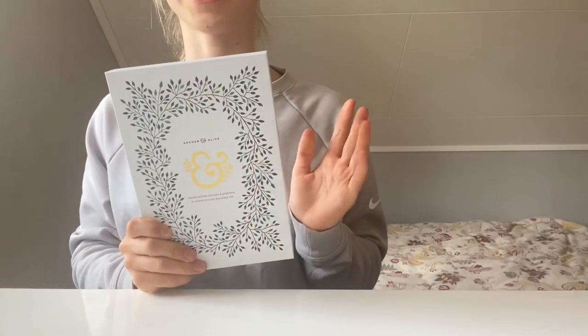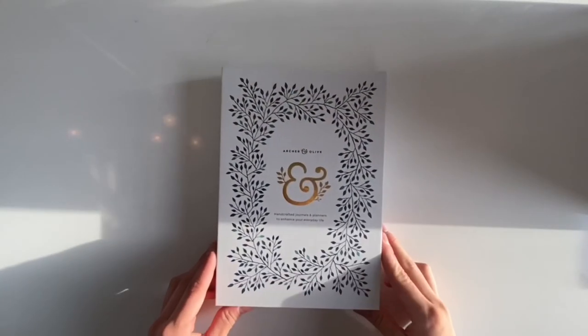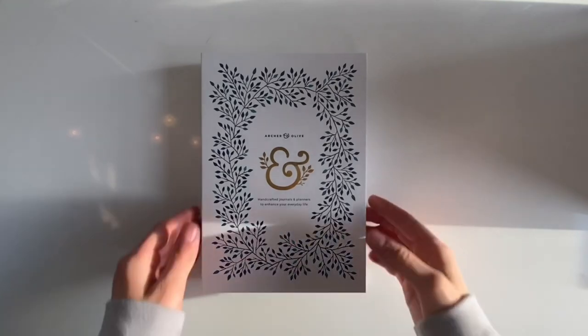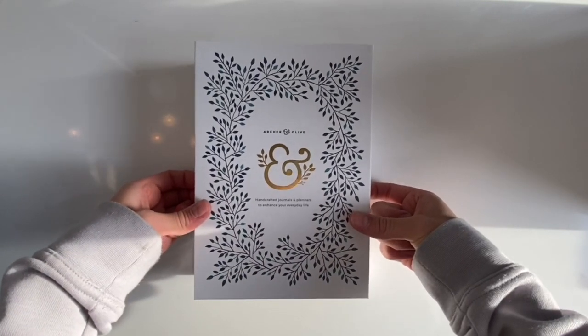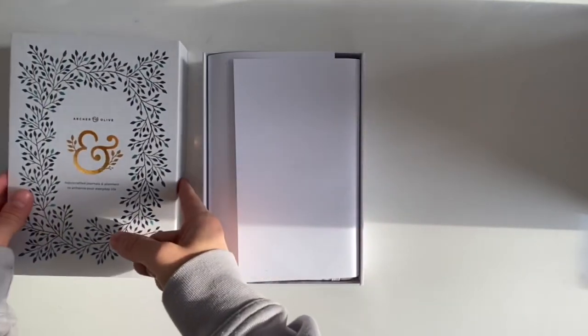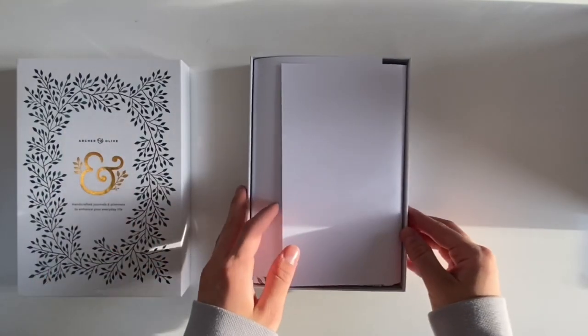The paper is really cool because in the lines there are dots, so it's much easier to keep your notes organized and neat. The next thing is probably my favorite thing of the entire haul and it's my new Archer and Olive blue journal.